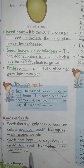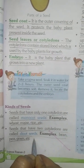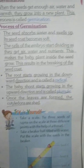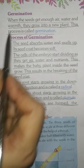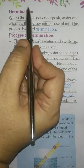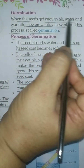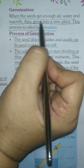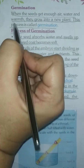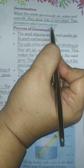pea, gram, etc. Revise for two minutes. Next we will start germination. Underline: When the seeds get enough air, water and warmth, they grow into a new plant — this process is called germination.